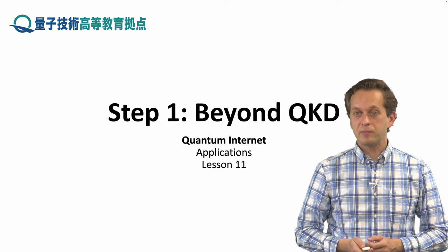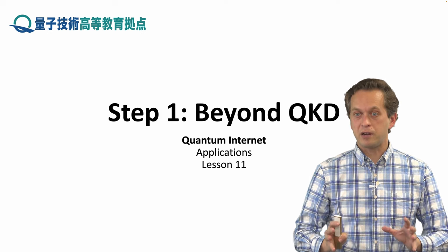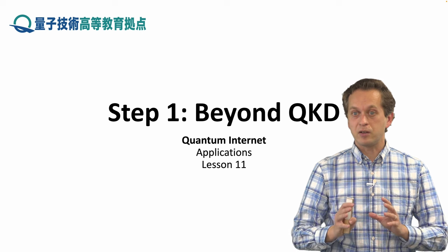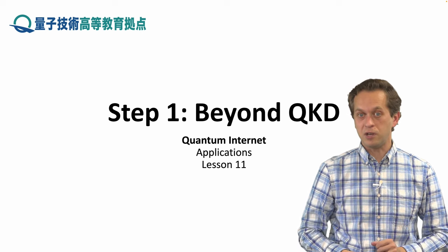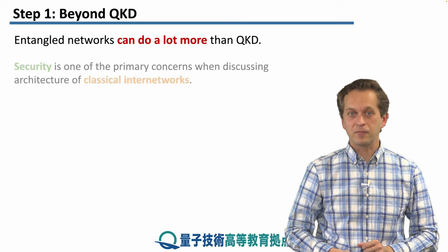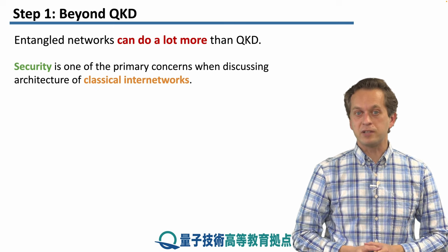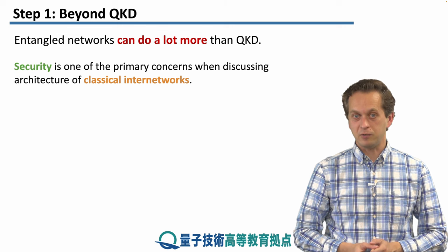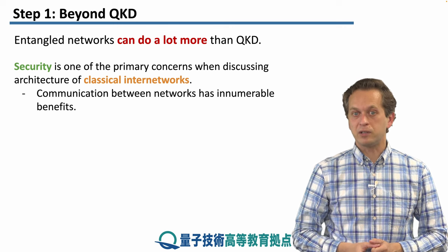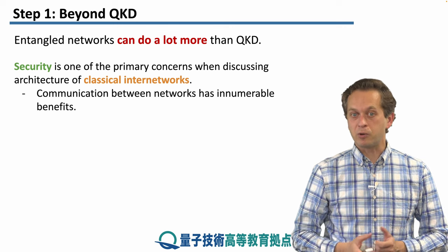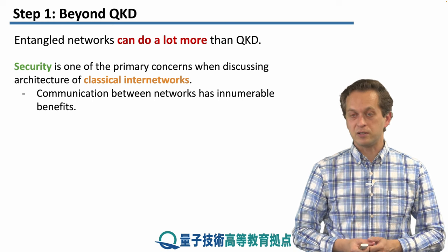In the first step we're going to tell you about the main message of this entire block of three lessons, and that's that quantum networks can do more than just QKD. Security is one of the primary concerns when discussing the architecture of classical networks, and communication between networks has innumerable benefits.